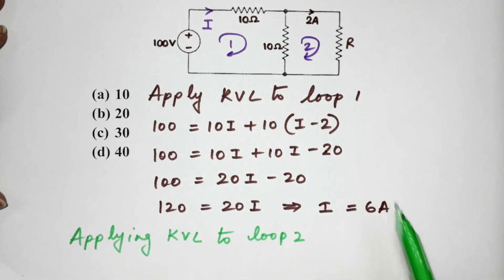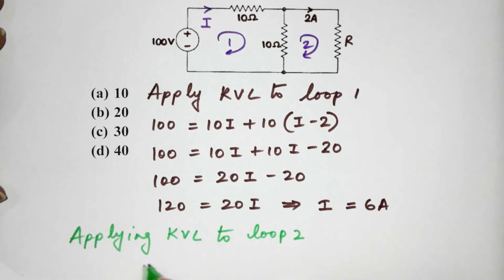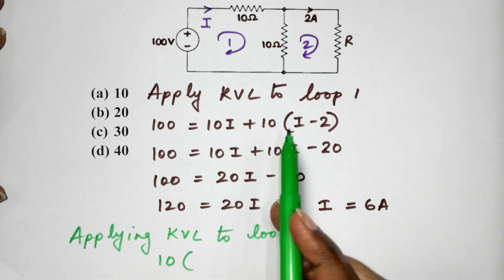Now, when we do that, what do we get? We get here the expression 10 into, that's 2 minus I.